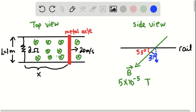So on the left side, you have a top view, and on the right side, I've drawn a side view so that you can understand the relationship between the magnetic field and the railing system.